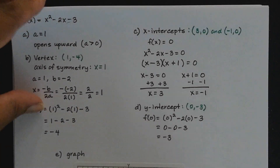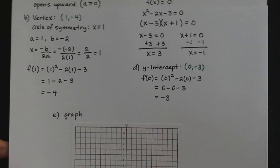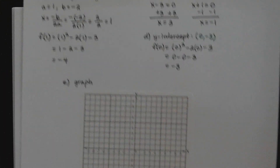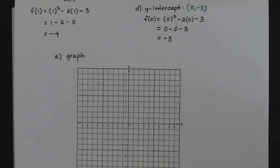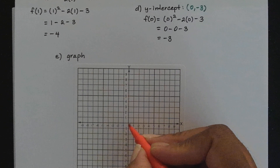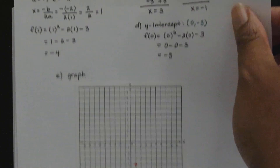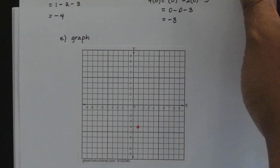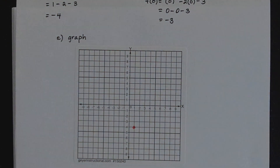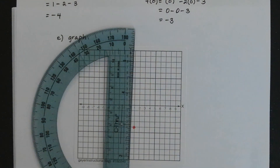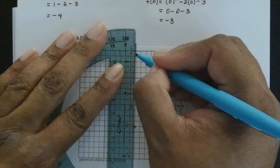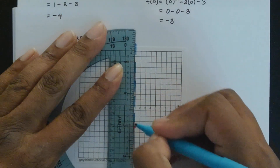We already know the vertex — that's going to be (1, negative 4). I'm going to go ahead and plot that: go to the right 1 and down 4. Also, we know the axis of symmetry, which is x equals 1. That's going to be that vertical dotted line going through the x-axis at 1.